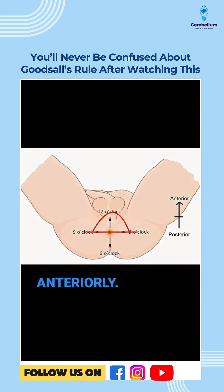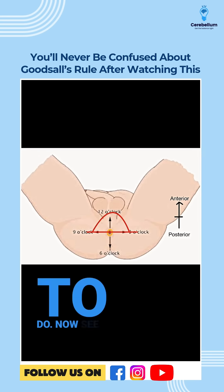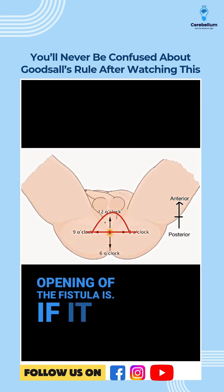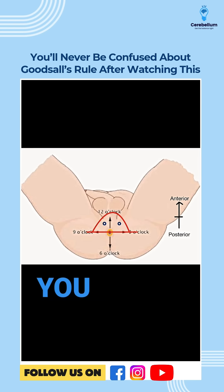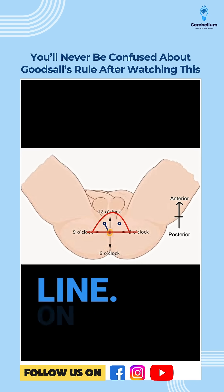That's all you need to do. Now see where the external opening of the fistula is. If it lies within the semicircle, like you see here, then the tract will be straight — it will go in the same line.